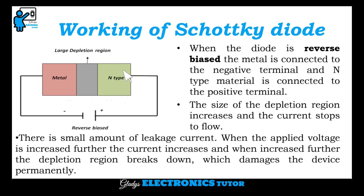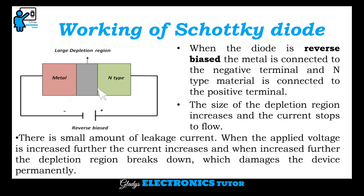This is the reverse biased condition. When the diode is reverse biased, the metal is connected to the negative terminal and the N-type material is connected to the positive terminal. The size of the depletion region increases and the current stops to flow.